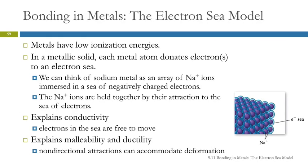Metals have low ionization energies. It's easy to remove electrons. So we can think of sodium metal as being an array of sodium ions. Each sodium atom has donated one electron to this ocean around it, the sea of electrons. These electrons are not attached to a specific atom or ion. They're just free to move around.